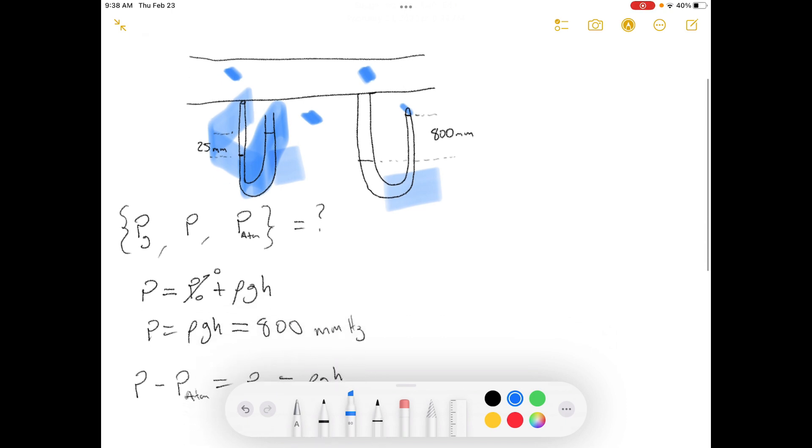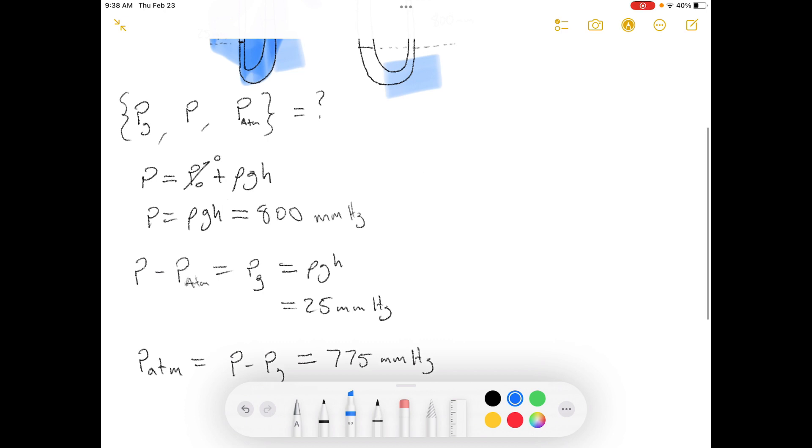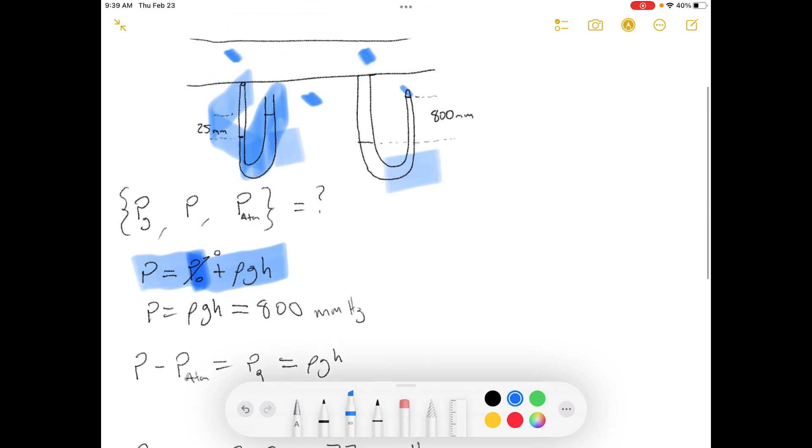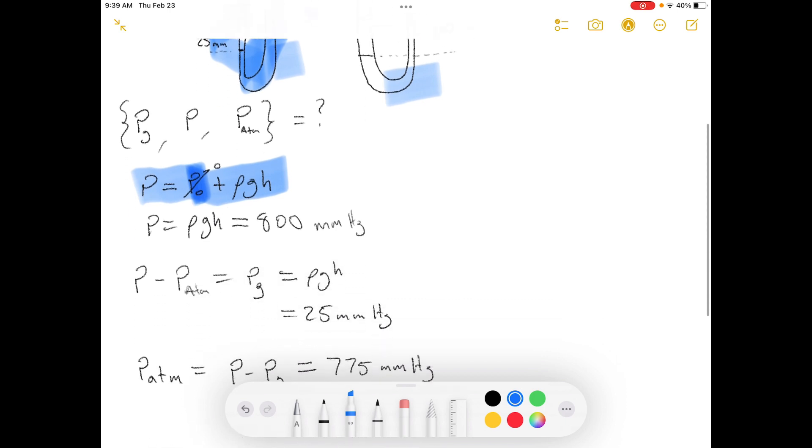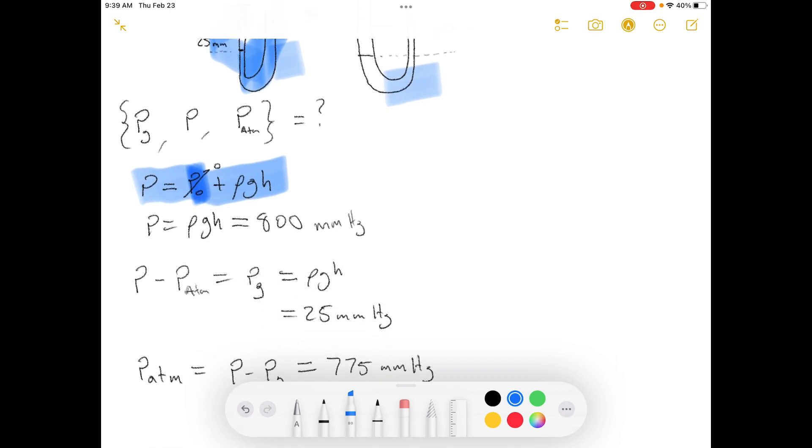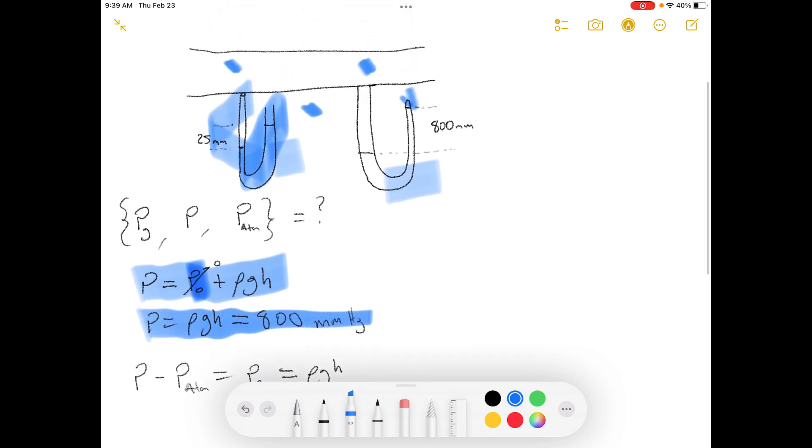Let's start off with the absolute pressure. Let's find out what the absolute pressure is. Our reference pressure is this end, which is the closed end, which is basically a vacuum. So that goes to zero and then we're left with this many millimeters of mercury, 800 millimeters of mercury.